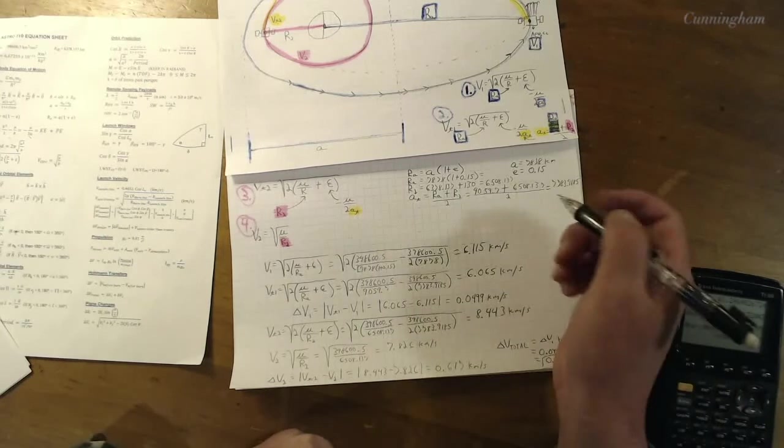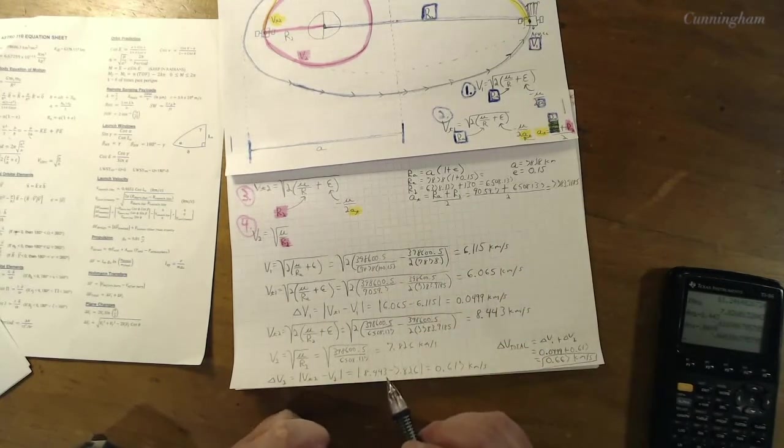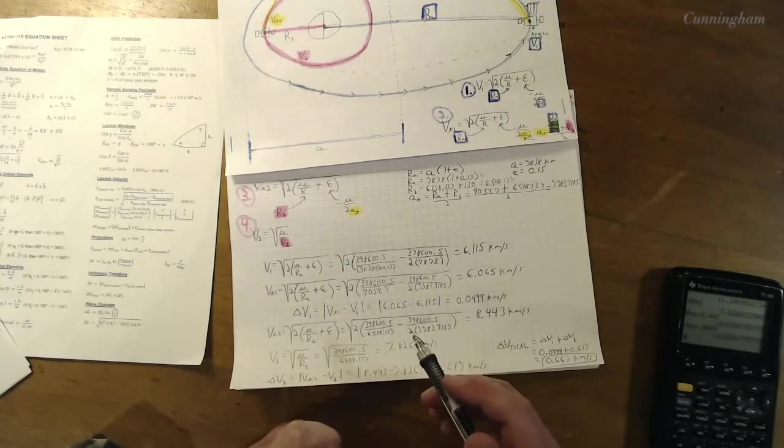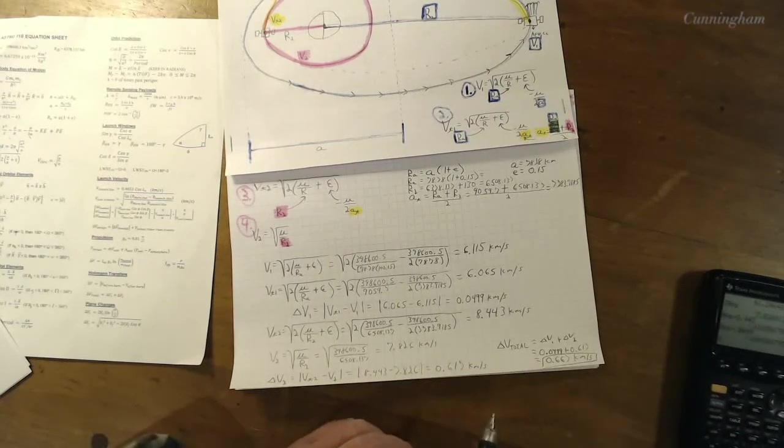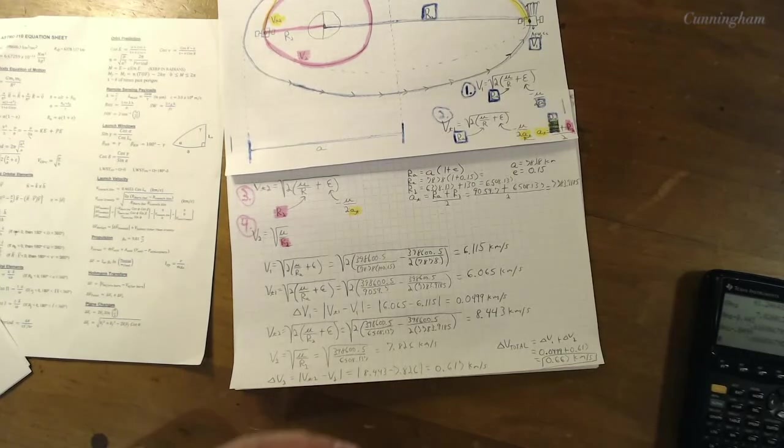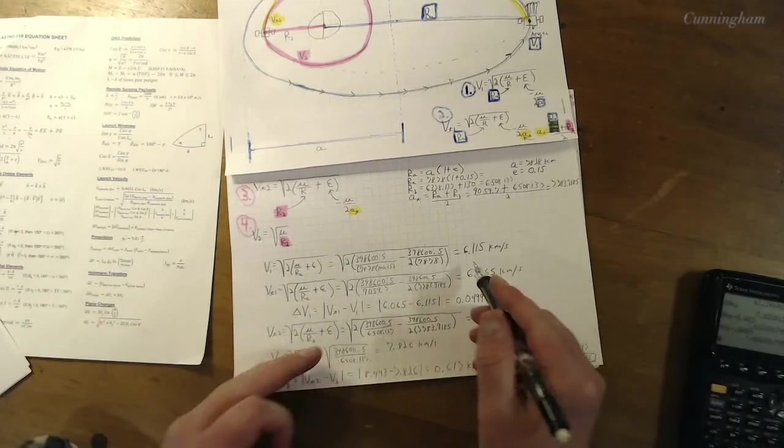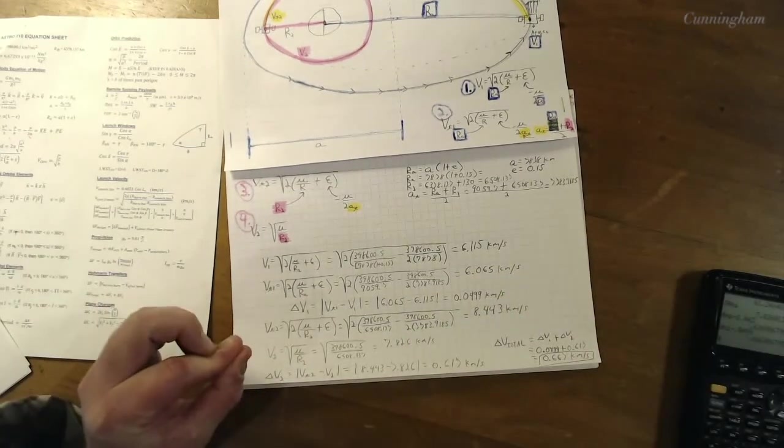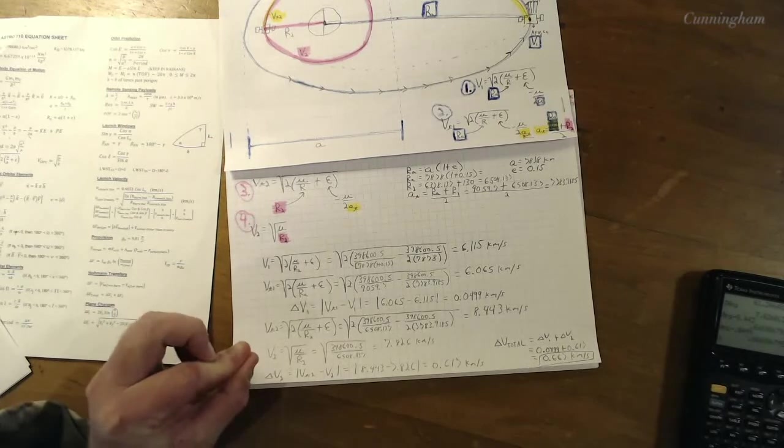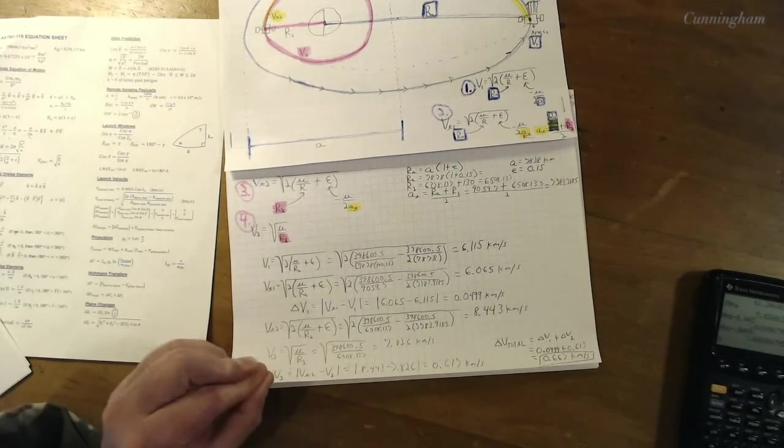Time of flight is what they're asking for. Well, what do we know? We know that the full orbit, if we were to stay in that transfer orbit for a full orbit, it would be 2π times square root of a cubed over mu, and that's supposed to be my little cursive t again.